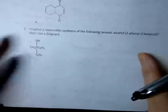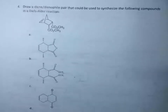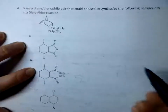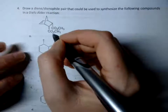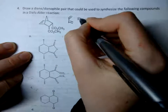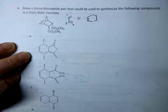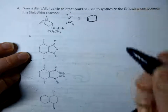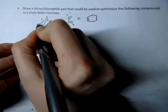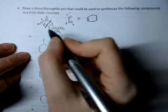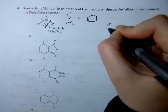Next question: draw a diene and a dienophile pair that could be used to synthesize the following compounds in a Diels-Alder reaction. What I do is find the double bond in the product ring and assume that double bond is going to be what used to be part of the diene, because in a Diels-Alder, between carbons 2 and 3 on the diene is where the new double bond is formed in the ring. So I'm assuming this double bond here is the diene, and the new bonds were formed between carbons 4-5 and 6-1.